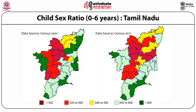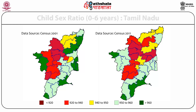Remember that traditionally southern India and eastern India were very different from northern India. But today southern India, and particularly Tamil Nadu, is showing very disturbing trends. For instance, in 1991 Salem in central Tamil Nadu was the worst district of all the roughly 550 districts in the country.